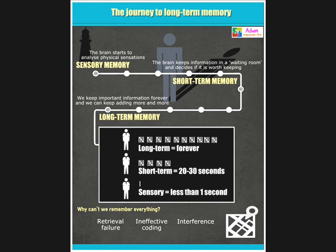Another issue discussed is why we can't remember everything. There are three main reasons given. Firstly, there's retrieval failure. Secondly, there's ineffective coding. And finally, there's interference.